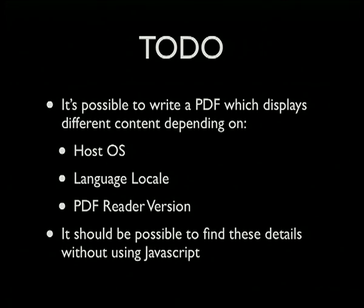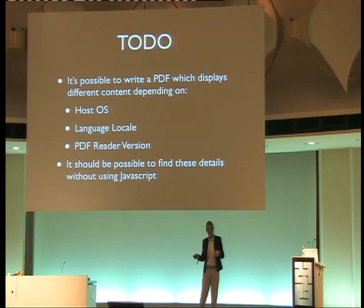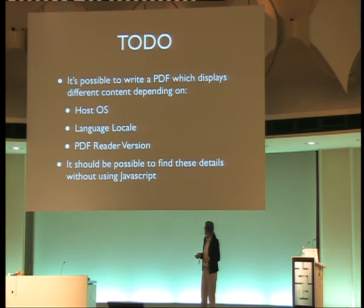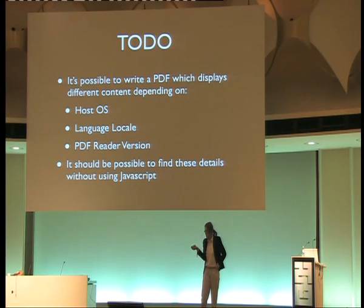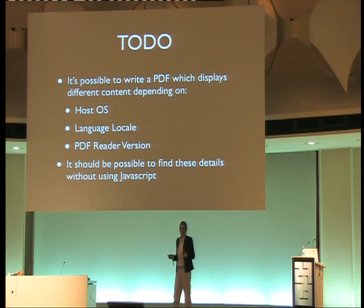There are a bunch of ways of doing alternative data streams in PDFs, so you can have a PDF file that has different text on the page for each language depending on the locale of the computer you open it on. Even without using JavaScript it's possible to do that, and basically you could make a PDF file never look the same on any two systems.